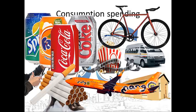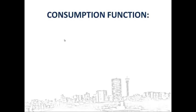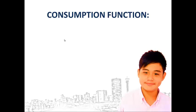Consumer spending is a large and relatively stable part of total spending. Consumer spending is shown by the capital letter C. The relationship between what we spend and our income is called the consumption function. Let's look at three important characteristics of the consumption function that you have to know by looking at Joan.